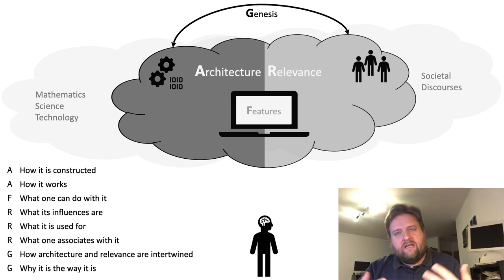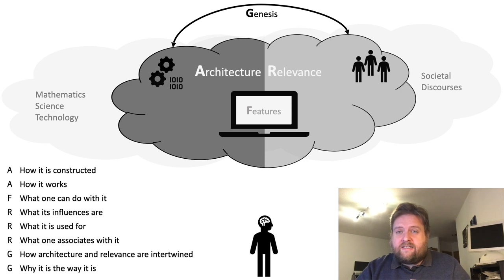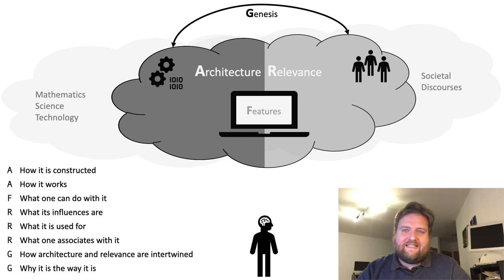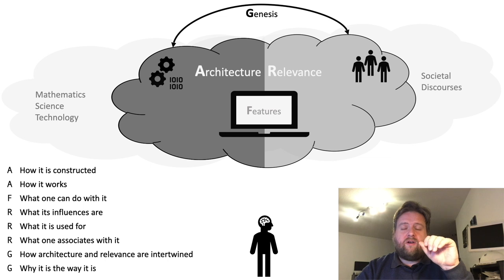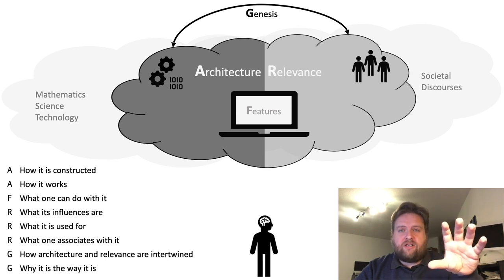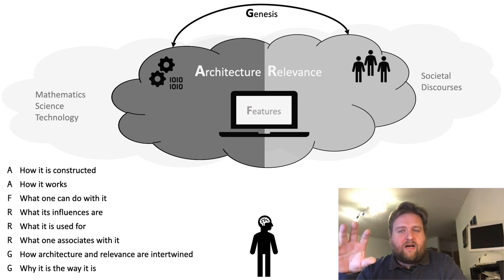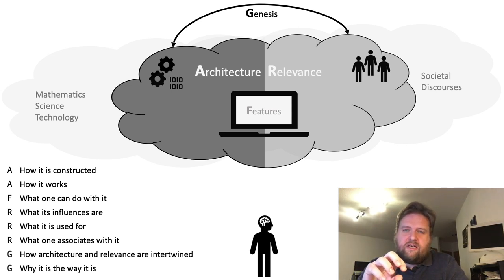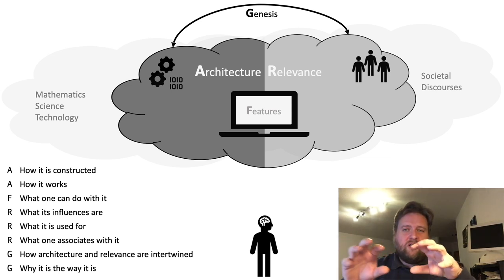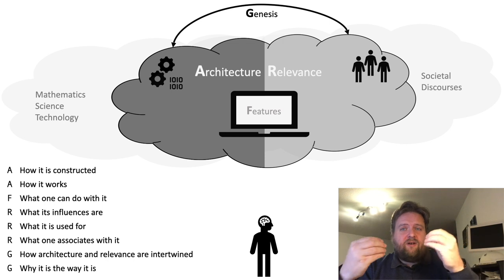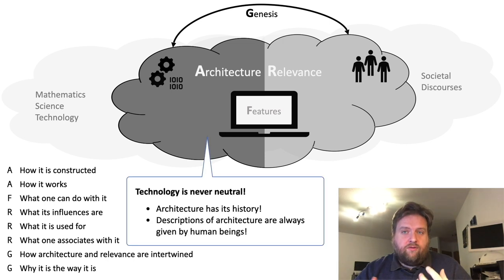End-to-end encryption is not something visible at the feature level; it happens transparently in the background. This interrelation is necessary to explain why the artifact is the way it is. Without looking at genesis, you can describe the architecture, aspects of relevance, and features, but for an explanation you need this kind of interrelation over time.